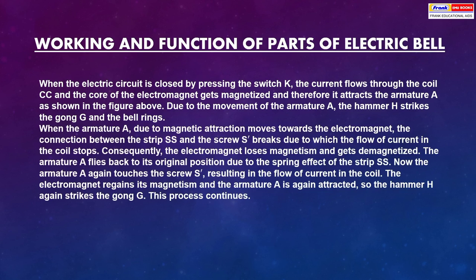When the armature A due to magnetic attraction moves towards the electromagnet, the connection between the strip and the screw S breaks, due to which the flow of current in the coil stops. Consequently, the electromagnet loses magnetism and gets demagnetized.